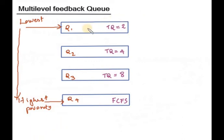Suppose here is a process P1. P1 is at lowest priority queue. So it will use 2 time quantum.